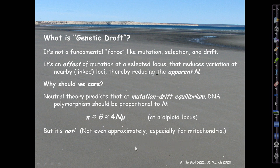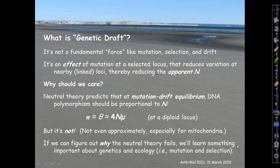But it's not. This is the puzzle that gives rise to the term genetic draft and to this extended treatment of it. The problem is that this theoretical expectation is not satisfied by real data, not even approximately, and especially in mitochondria. So the reason for going into this subject at length is that if we can figure out why the neutral theory fails in this way, we'll learn something important about genetics and ecology — about mutation and selection as mediated by real ecology in the real world.